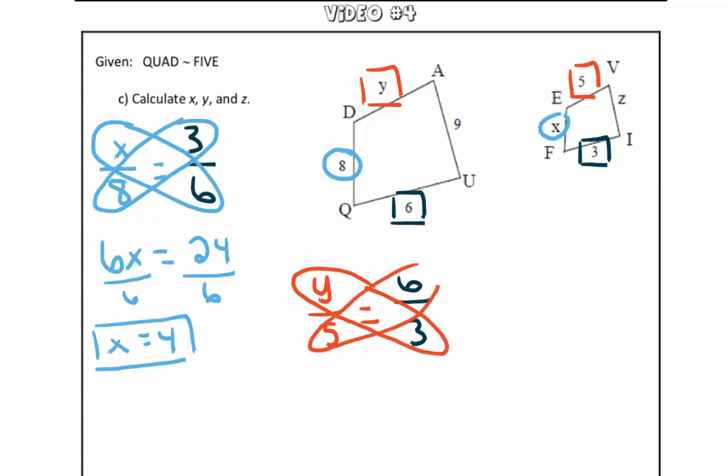y times 3 and 6 times 5. So we get 3y is equal to 30. Divide both sides by 3, so y is equal to 10.